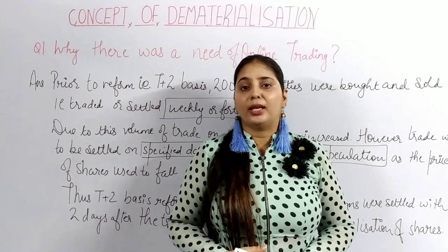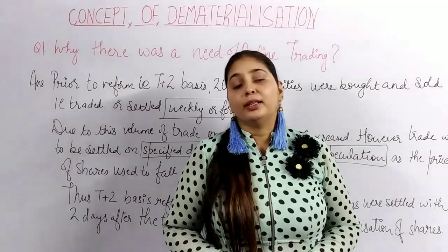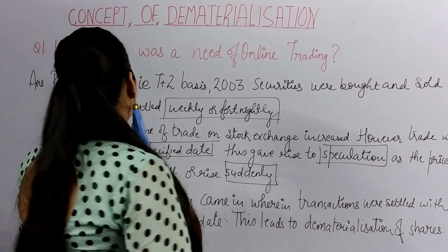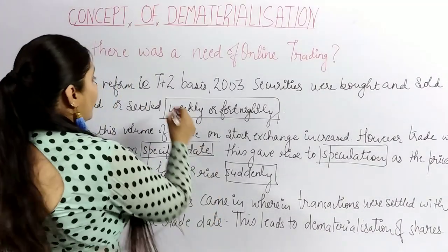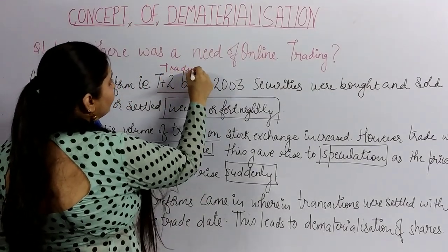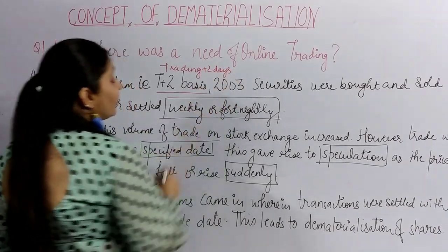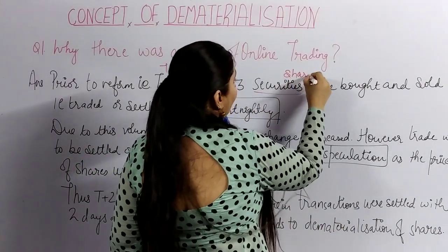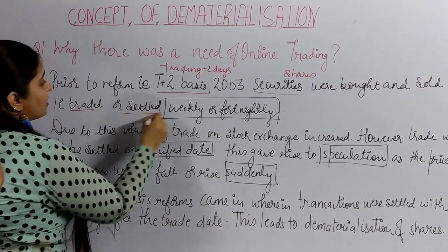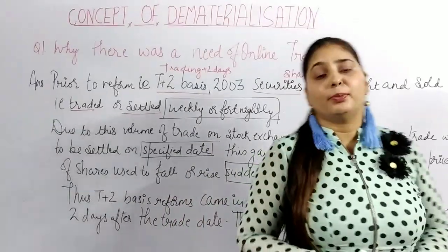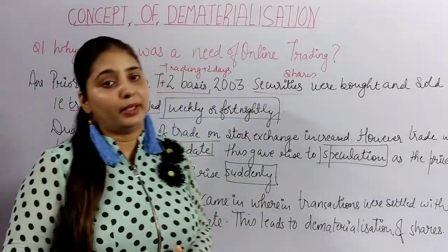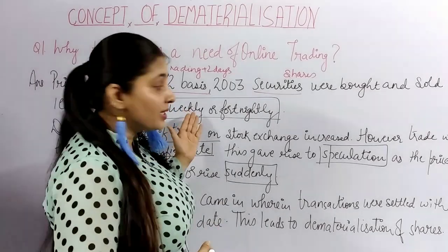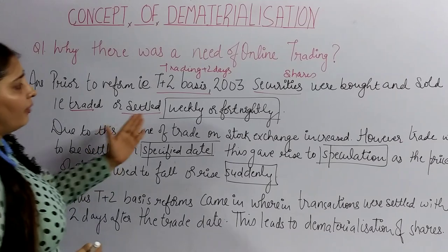This started when we began trading in shares on an online basis. Why was there a need for online trading? Prior to the T plus 2 reform — where T plus 2 stands for trading plus 2 days — securities, that is shares, were bought and sold, traded or settled weekly or fortnightly.